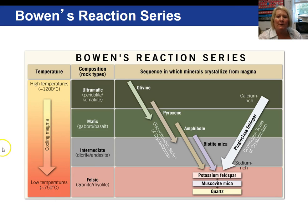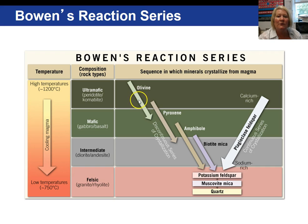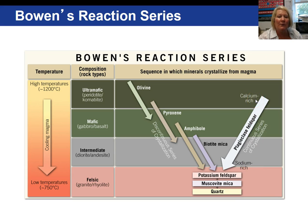Looking more closely at Bowen's Reaction Series, temperature ranges from around 1,200°C down to 750°C. The magma compositions represented are ultramafic, mafic, intermediate, and felsic. There are two series shown: the discontinuous series and the continuous series. In the discontinuous series, olivine crystallizes first, then pyroxene, amphibole, and biotite — these are our ferro-magnesium minerals. The last to crystallize are non-ferro-magnesium minerals, with quartz being last. The continuous series is a series of plagioclase feldspars, ranging from a calcium-rich, higher-temperature end member to a sodium-rich, lower-temperature end member.